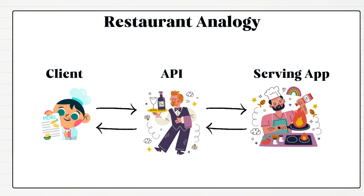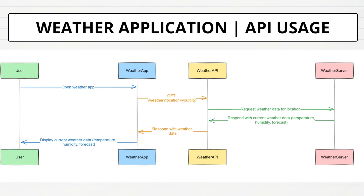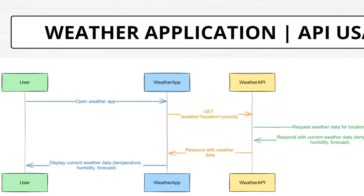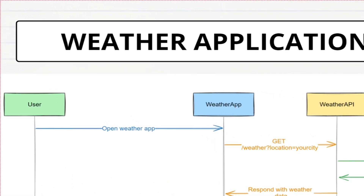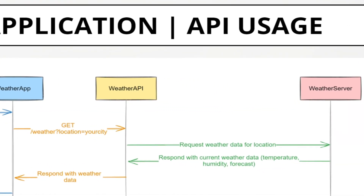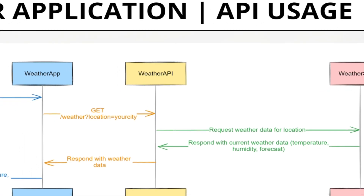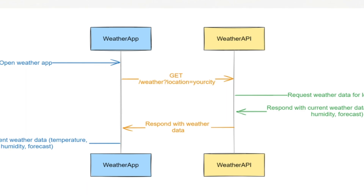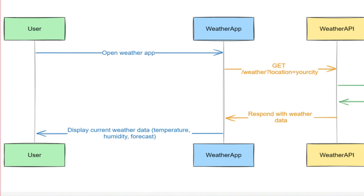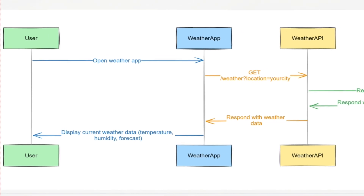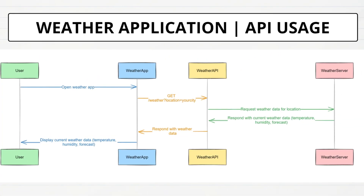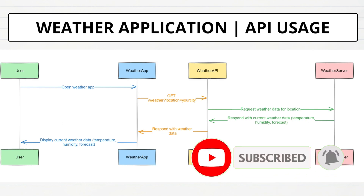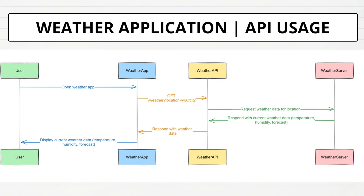Let us see one more real-world example in the IT industry. Most of us use a weather application on our smartphones to check the current weather. When we open the weather app and request the current weather for our location, it uses an API to send the request to a weather server for weather data. The server application receives the request with location details, processes it, and sends back the current weather data for that location. The API request might look something like GET slash weather, passing the location. The weather app receives the data and displays it to you. The response from the weather service would include details like temperature, humidity, and forecast, which the application then presents to you in a readable format. This process allows the weather app to provide up-to-date weather information without needing to store and constantly update the data itself. Instead, it relies on the API exposed by the weather service to get the information whenever needed.